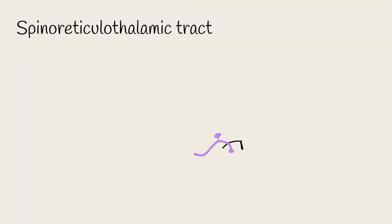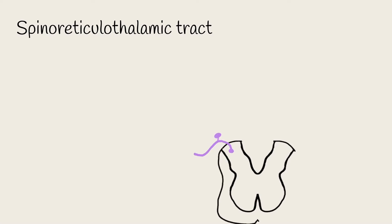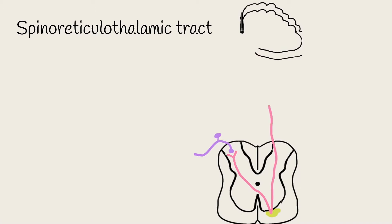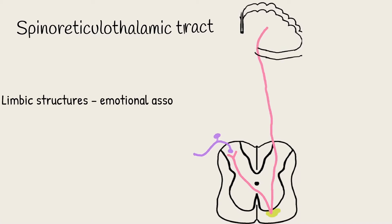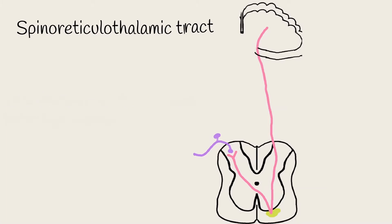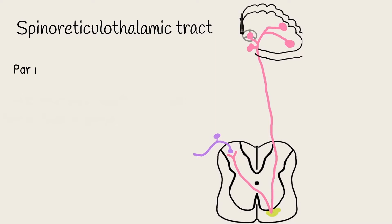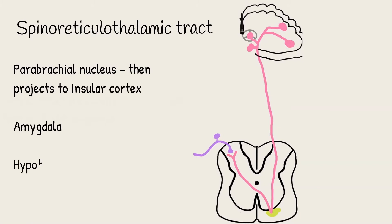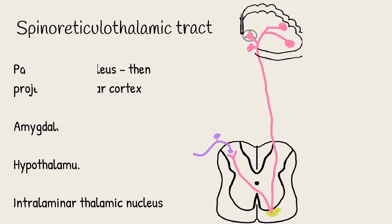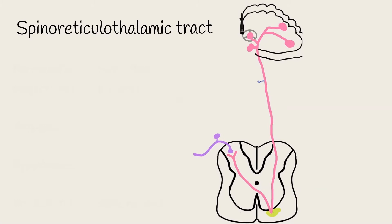The spinoreticulothalamic tract is an additional pathway through which nociceptive information can be centrally transmitted. It synapses at a variety of structures and locations, particularly limbic structures associated with emotion and fight-or-flight responses. There are four key areas it synapses in: the parabrachial nucleus, which then projects to the insular cortex; the amygdala; the hypothalamus; and the intralaminar thalamic nucleus, from which the information can be sent to various regions of the cortex.